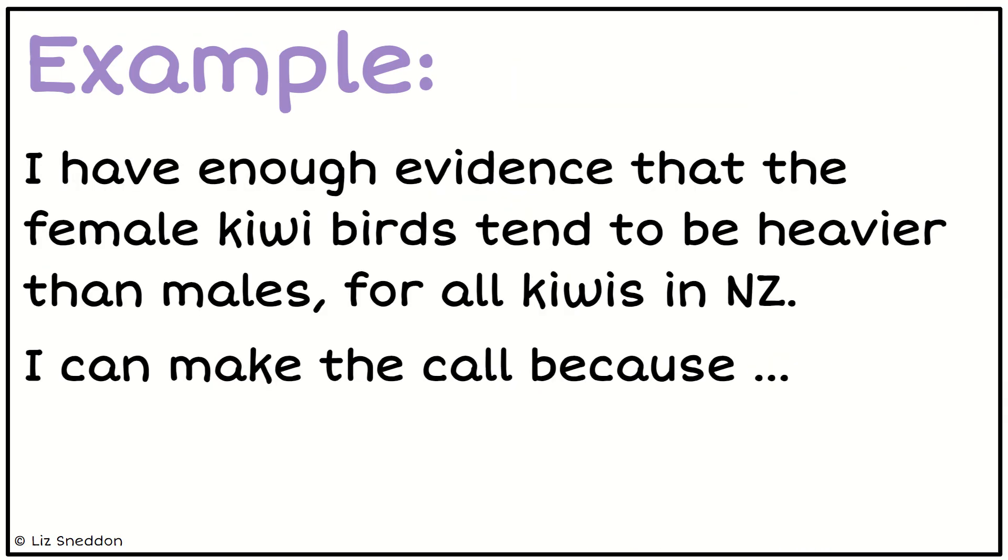When we come to write our answer up, this is what we would do: I've got enough evidence that the female kiwi birds tend to be heavier than the males for all kiwis in New Zealand. Let's check that's got everything we need. I've got the conclusion, I've compared the females and males, so I've got my categorical variable. I've talked about which one's heavier, so I've got both the direction and the numeric variable, which is weight, and then I've got the population for all kiwis in New Zealand.